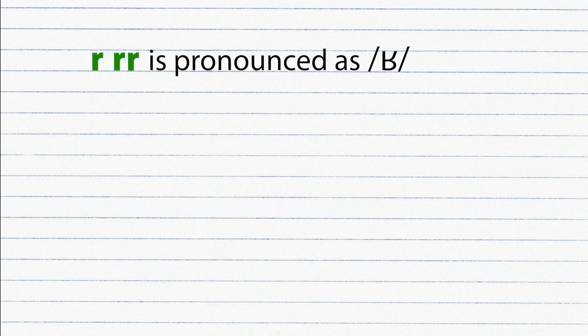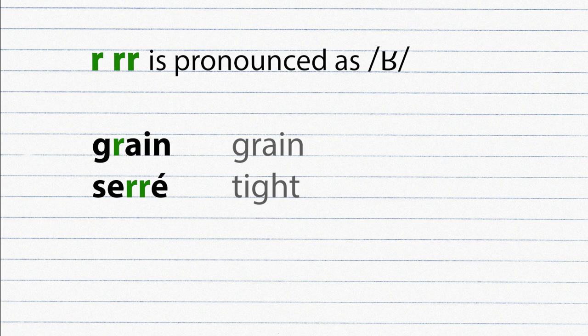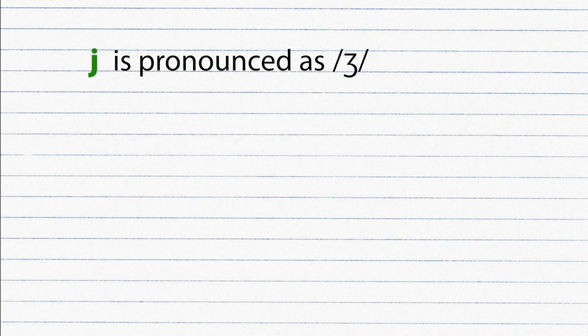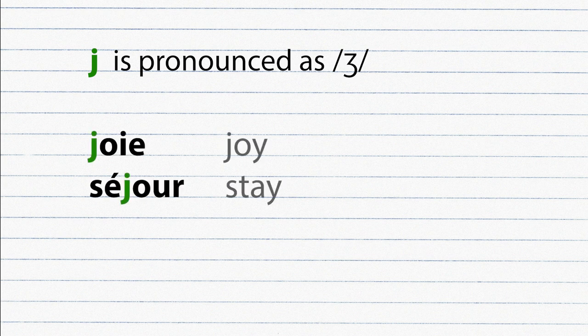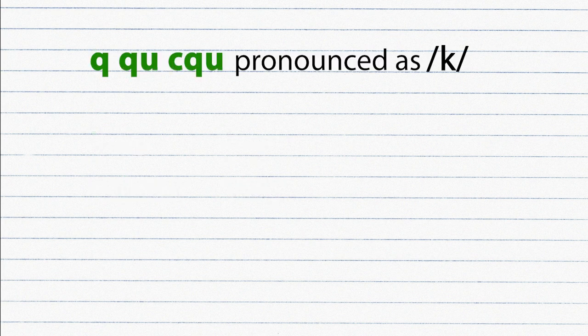R or double R is pronounced as re. Example: grain, serré. J is pronounced as Je. Joie, séjour.